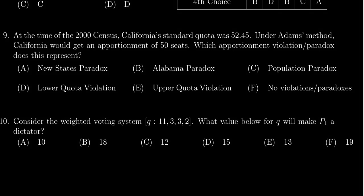In this video we provide the solution to question number nine for practice exam three for Math 1030. At the time of the 2000 census, the state of California had a standard quota of 52.4945 seats. Under Adams method, California would get an apportionment of 50 seats.